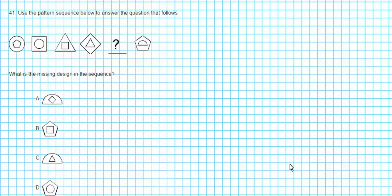Alright, let's take a look at question 41. It says, use the pattern sequence below to answer the question that follows. So we have a sequence of shapes, and the question is: what is the missing design in the sequence? So we have outer and inner shapes. Let's go ahead and write them down and see if we can identify a pattern occurring either on the outside or on the inside.